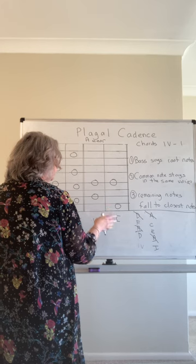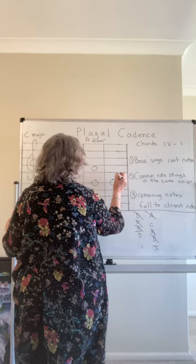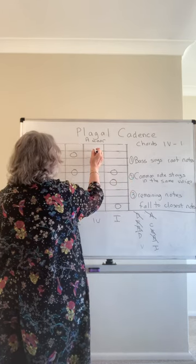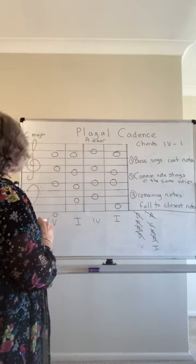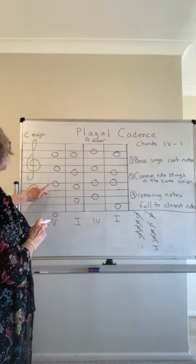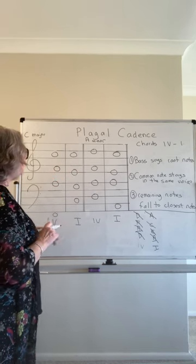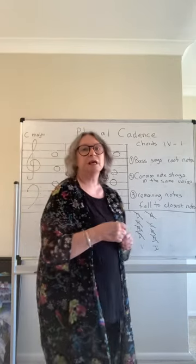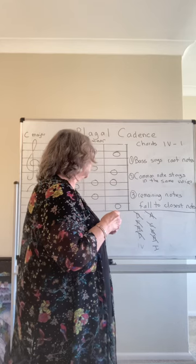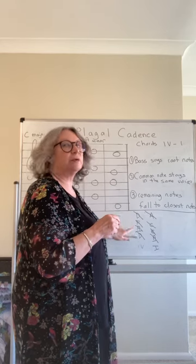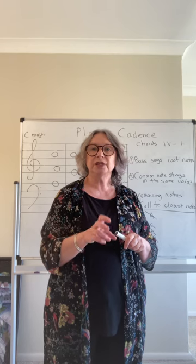The remaining notes fall to their closest notes. F up in the alto falls to E, and D in the soprano falls to C. There's a bit of a gap, but the voices are fairly evenly spaced overall — we're looking for smooth progressions without notes bunched too closely together. In the minor key, there's no leading note involved here; the leading note in A minor would be G sharp, and since none of the chords contain it, we don't need any accidentals in the plagal cadence.